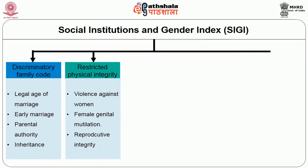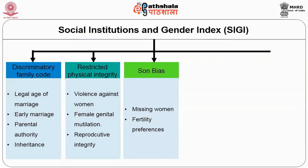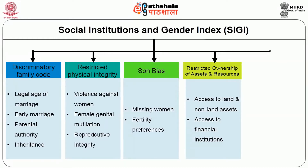The second dimension is restricted physical integrity — whether the legal framework provides protection against domestic violence, rape, and sexual harassment; the percentage of women who agree that a husband is justified in beating his partner in certain circumstances; percentage who have experienced physical or sexual violence from an intimate partner; percentage who have undergone genital mutilation; and percentage of married women aged 15 to 49 with unmet need for family planning. Third is son bias, captured through missing women — sex ratios in age groups 0–4, 5–9, 10–14, 15–64 and above 65 — and fertility preferences. Fourth is restricted ownership of assets and resources, including equal access to land, non-land assets, and financial institutions.